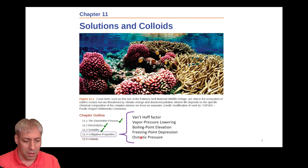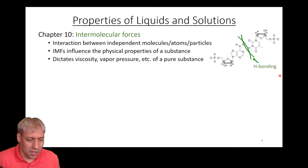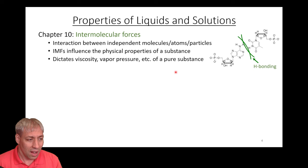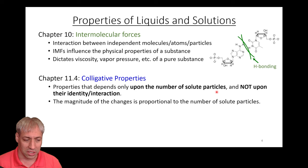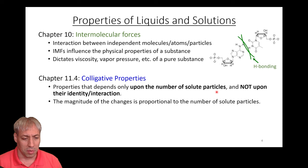In chapter 10, we talked about intermolecular forces — how molecules interact through dipole-dipole interactions — and how this dictates viscosity and vapor pressure of pure substances. Chapter 11 introduced like-dissolves-like and how intermolecular forces dictate solubility. Now in section 11.4, colligative properties are different from everything else we've talked about, because they are only dependent on the number of solute particles, and not upon their identity or interactions. There are specific properties that aren't dictated by intermolecular forces at all.